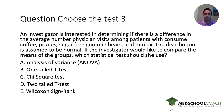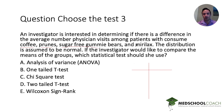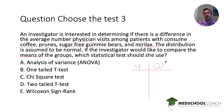Next question: an investigator is interested in determining if there is a difference in the average number of physician visits among patients who consume coffee, prunes, sugar-free gummy bears, and Miralax. The distribution is assumed to be normal, and the investigator would like to compare the means of the groups. Which statistical test should be used? We have four groups: coffee, prunes, sugar-free gummy bears, and Miralax. The data being evaluated is the mean number of physician visits — that's recorded as a number, so it's quantitative.